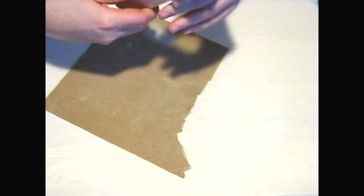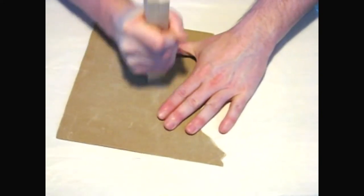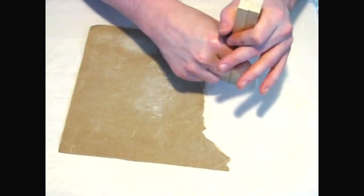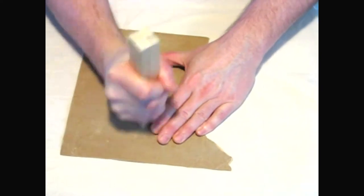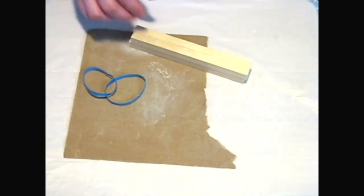Here I'm working to sand the ends flat to make sure that the four frame pieces are the same length. I found using two rubber bands to hold the four pieces together and sanding them all at the same time makes the process much faster.